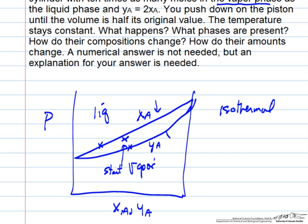Volume is occupied mainly by the gas, so it's a pretty good approximation. Ten times as many moles in the vapor phase means volume-wise it's almost all vapor, so we go to about half of that. So we go to a point where we expect we have half vapor and half liquid in our final condition.